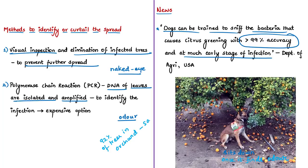In summary, this news article covered Huanglongbing disease, also called citrus greening disease or yellow dragon disease. It is a bacterial disease transmitted by a disease-infected insect called the Asian citrus psyllid. We also saw techniques to detect the disease and concluded with how dogs can be helpful to identify the presence of this disease at an early stage.